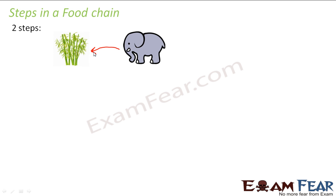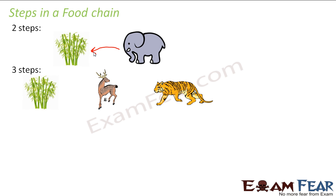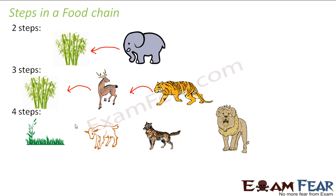Similarly, we can have a food chain with three steps — the one we considered earlier: deer feeding on plants, and these deer in turn are fed upon by the tiger. Similarly, we can have a four-step food chain. For example, goats feed on grasses, then jackals feed on the goats, and these jackals in turn are eaten by lions. So this is a food chain involving four steps.